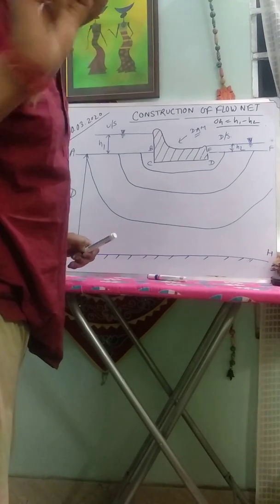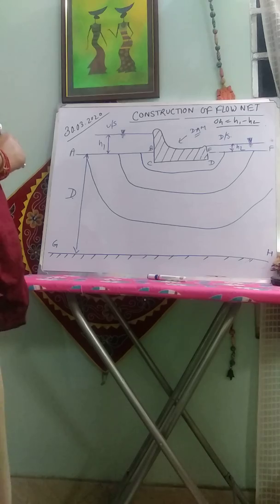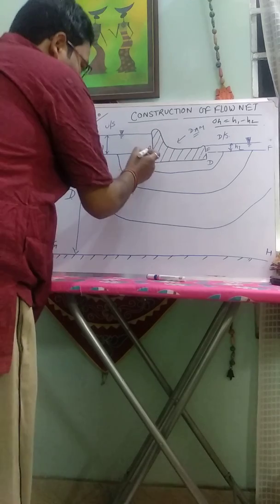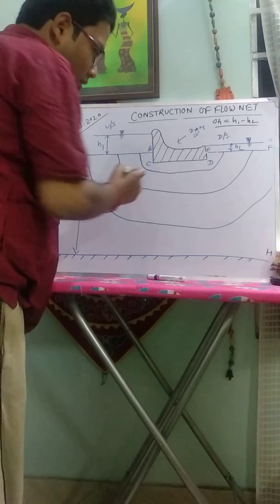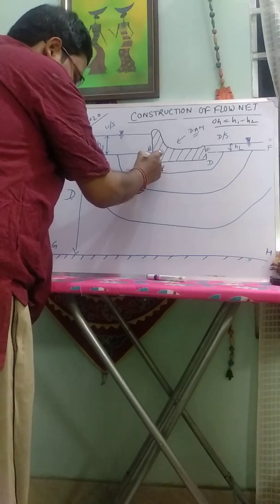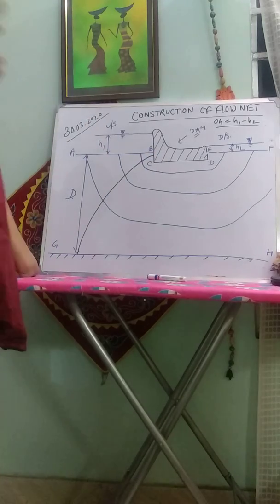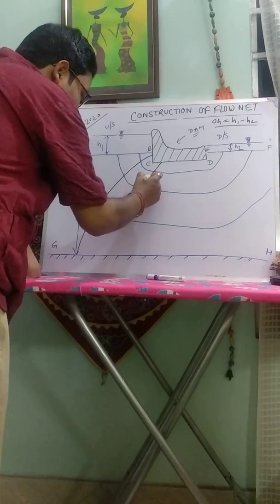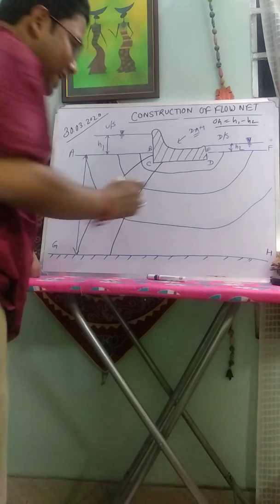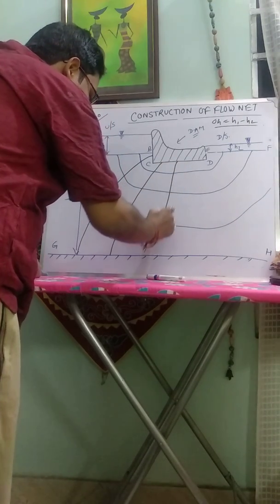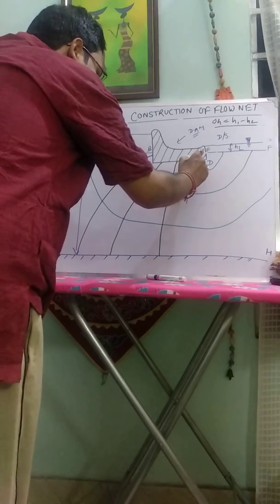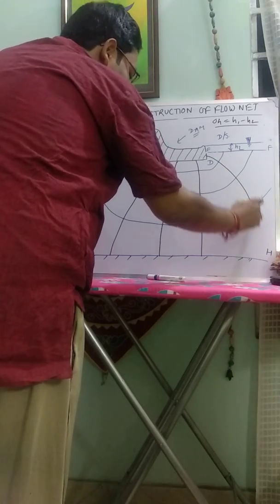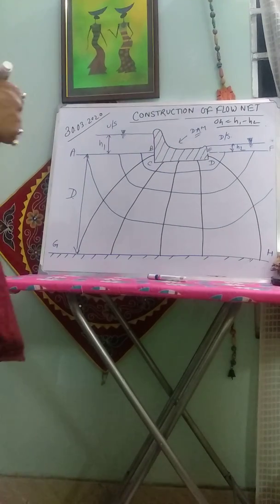Now, another is equipotential line. This is another flow line. This is one equipotential line. Then another equipotential line. Another equipotential line. Another equipotential line. From here, another equipotential line.